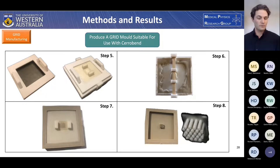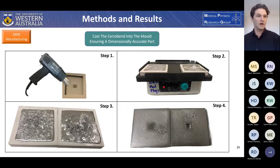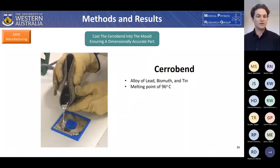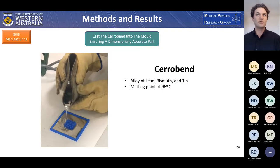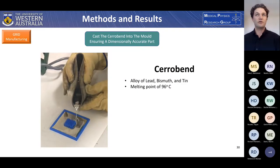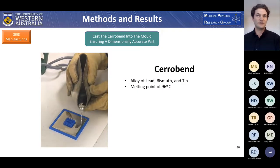Step six shows the mold secured in place. Step seven shows the mold after curing and cleanup. At this stage the silicone is quite flexible, so removing it from the plastic template is relatively easy, yielding the final mold in step eight. Cerrobend is an alloy of lead, bismuth, and tin with a melting point of 96°C. Its high atomic number makes it excellent for attenuating photons in this energy range.